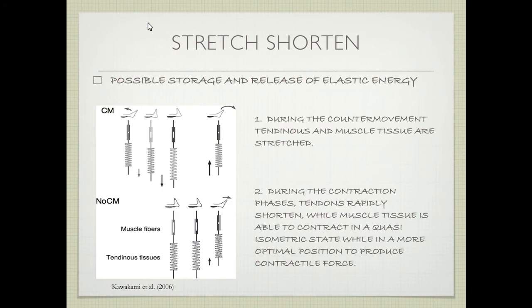When you do a counter-movement jump (CMJ), if you think of your tendons as a spring, when you land that spring is stretched. During the contraction phase, the tendons will rapidly shorten, but the tissue is able to contract in a quasi-isometric state while in a more optimal position, producing greater contractile force because it was stretched. According to the force-velocity curve, force can be maximal when you are contracting isometrically because you're at zero velocity. Without a counter-movement, shortening occurs primarily via the muscle fibers themselves, meaning you don't have optimal filament overlap.